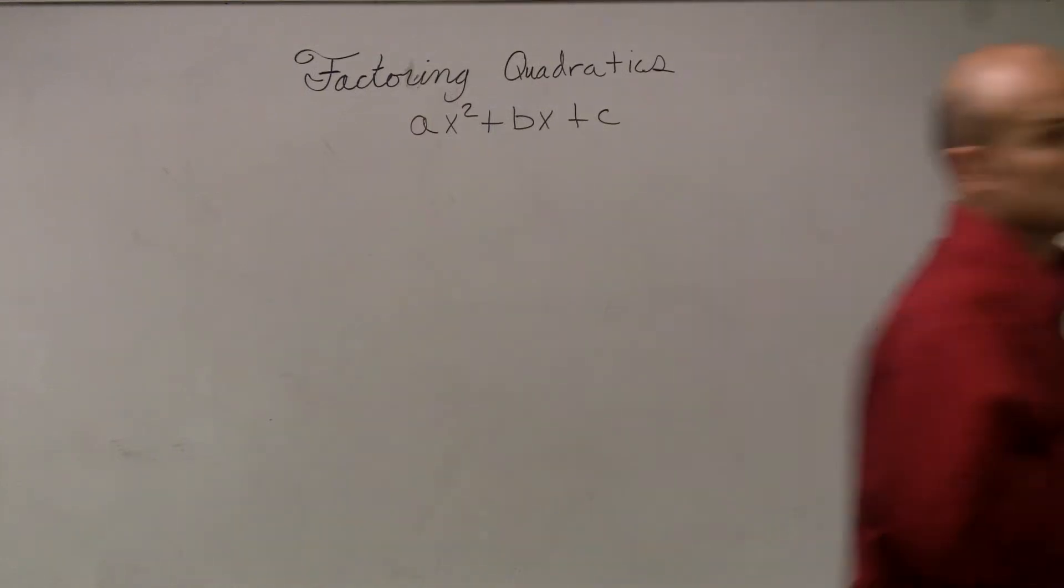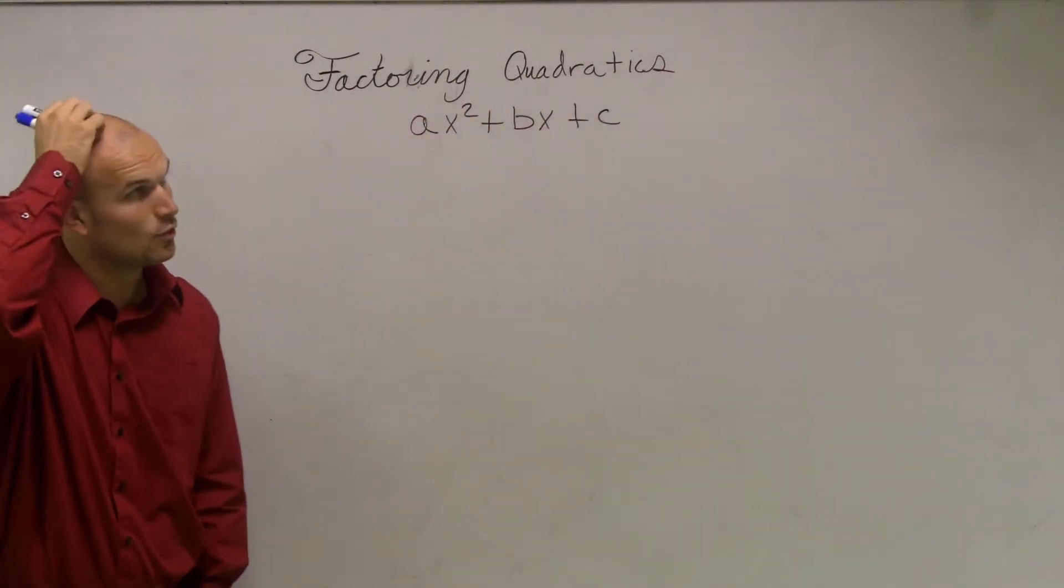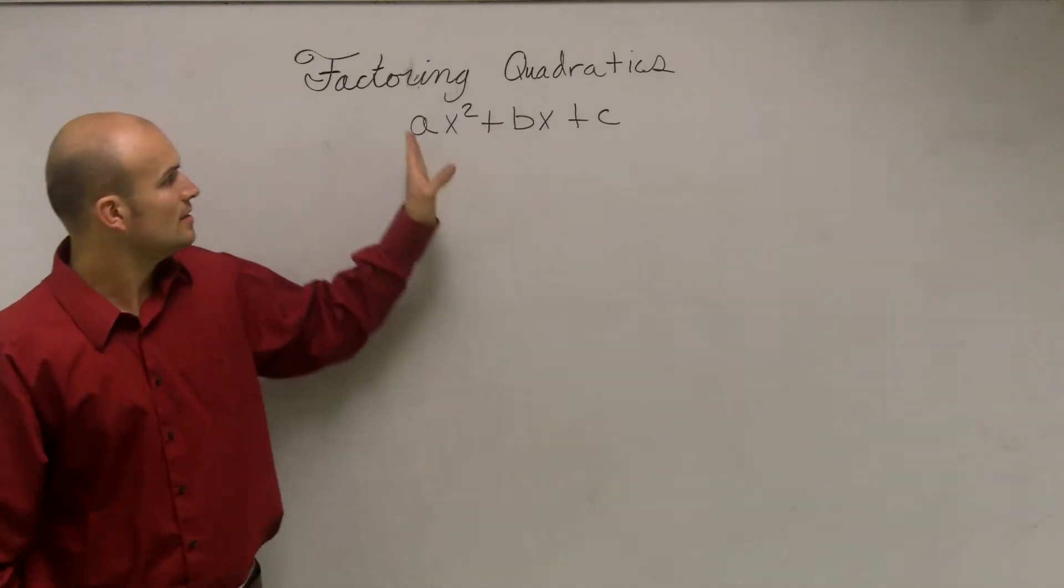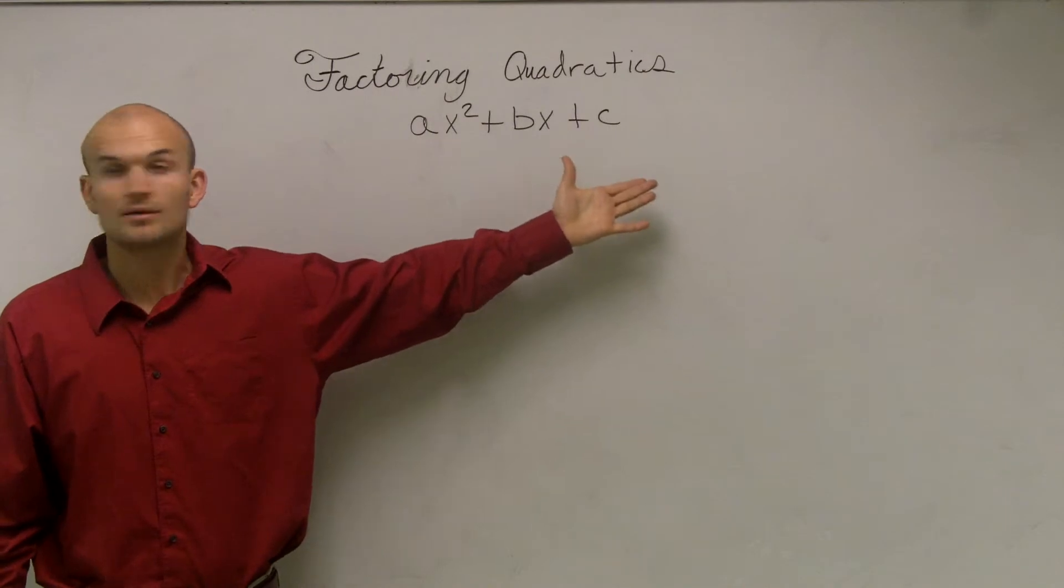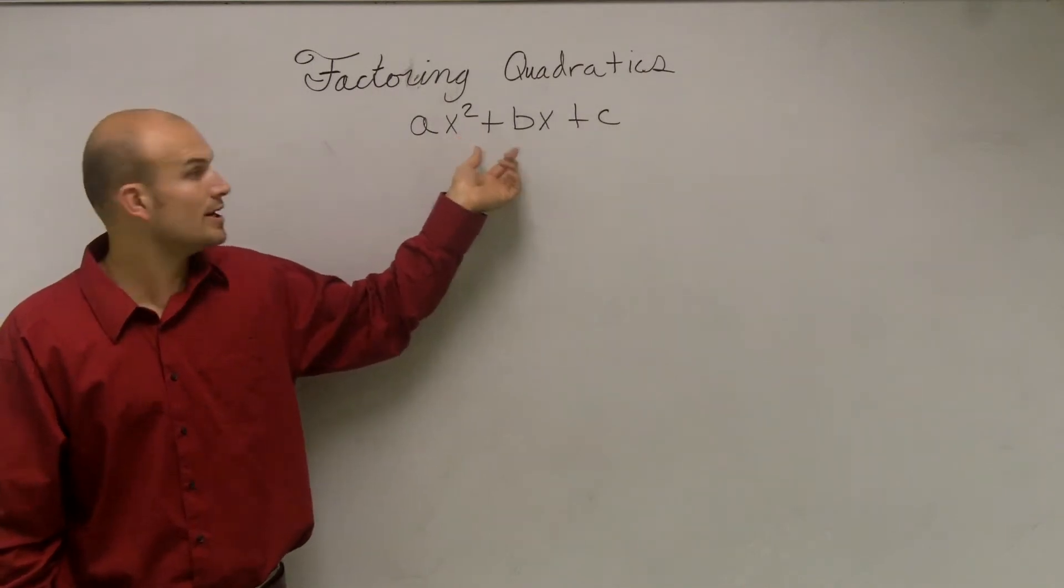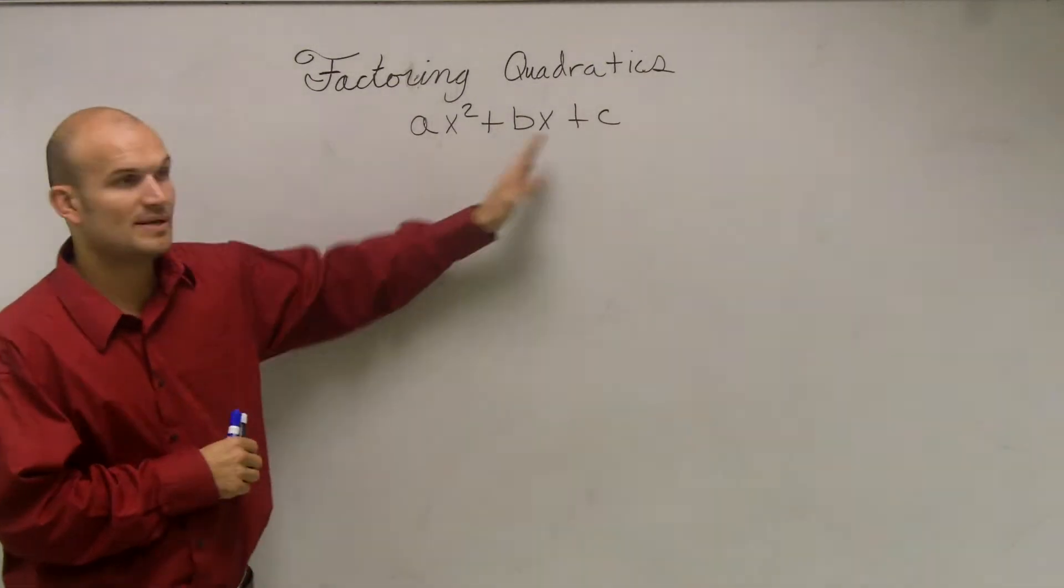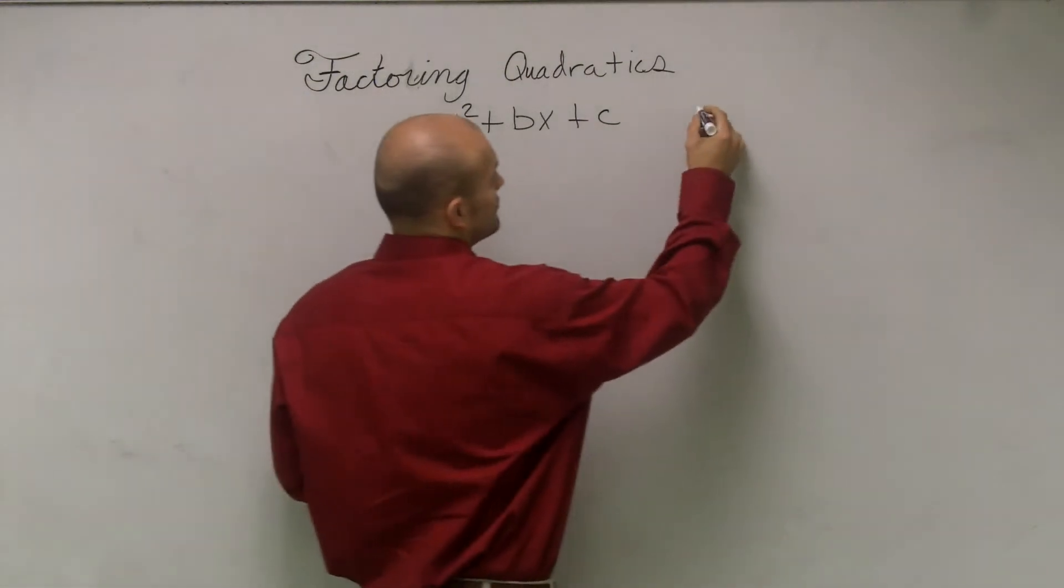Alright, so what we're going to do today is take a little bit of basics of factoring quadratics. Now, the main important thing you need to know is our quadratics are when we have a special type of trinomial, where our first term is an x squared, then we have an x and a c, which is going to be our constant, where a, b, and c are all going to be real numbers, but a cannot equal zero.